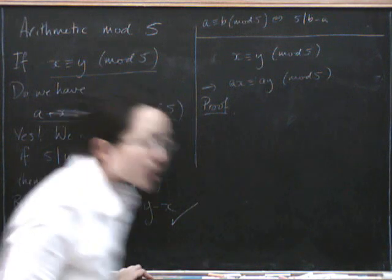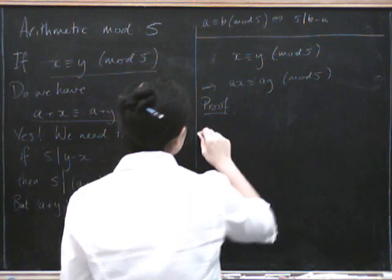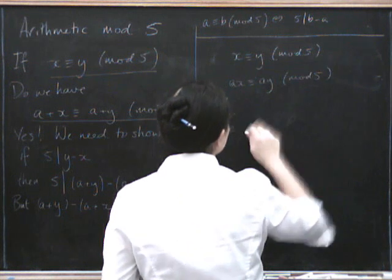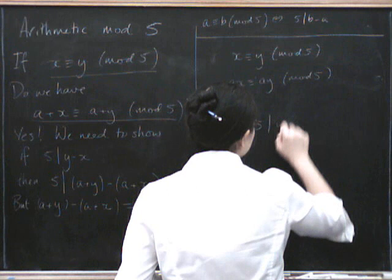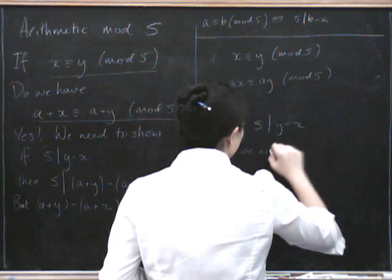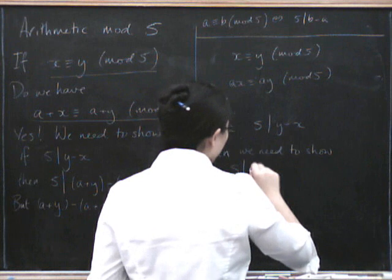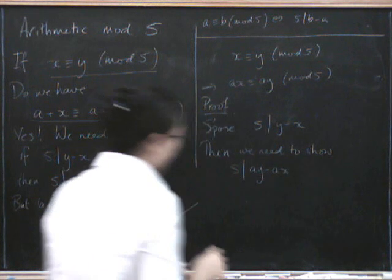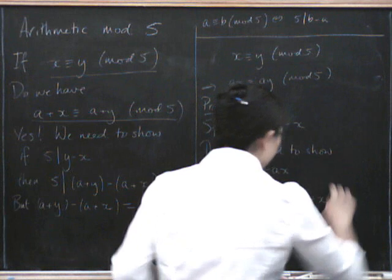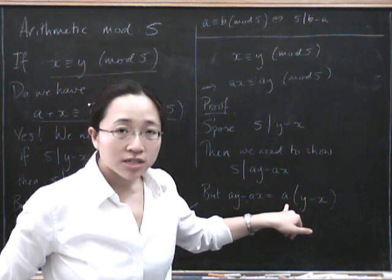Well, why don't you see if you can do it first in exactly the same way as this one was done. Have you had a go? So let's try it. What do we need to show? So suppose that this is true. So again, that means that 5 divides y minus x. Then we need to show this second thing, right? We need to show that 5 divides ay minus ax. But what is ay minus ax? That's the same as a times y minus x. Now, if y minus x is divisible by 5, then definitely a times y minus x must be divisible by 5.